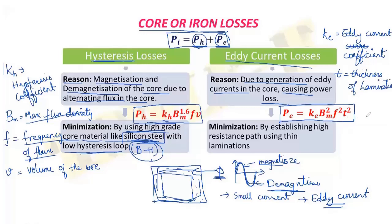As we know, the core is generally made up of thin laminations, and the thickness of the lamination is represented as T. Based on this equation, we can minimize these losses by establishing a high resistance path using thin laminations. If we reduce the thickness of the lamination, then we can reduce the eddy current losses in the transformer.